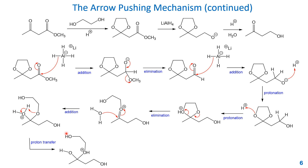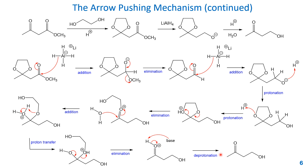After the proton transfer, we form a good leaving group — the glycol, which is one of the byproducts. The oxygen then uses its lone pair to push back and form a pi bond, kicking off this leaving group. This gives a protonated ketone. The last step is simply using a base to deprotonate this proton, pushing the sigma electrons to neutralize the positive charge, giving the final neutral ketone product. If you have any questions, please let me know and good luck.